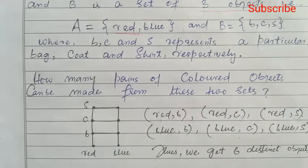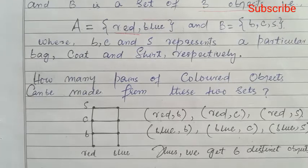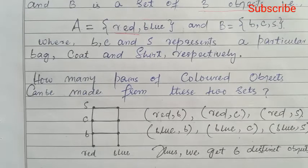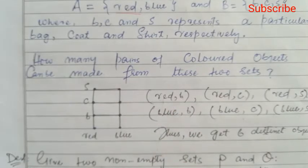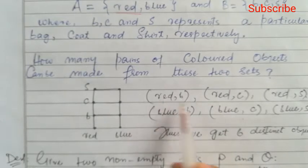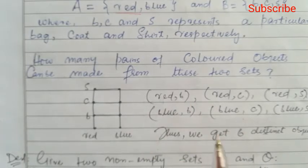For example, you have two pants and three shirts. For one pant, you can wear three shirts — pant stays the same but you can wear it with three different shirts. For another pant, you can again wear all three shirts. It means there are six ways — two pants times three shirts equals six ways to change your dress. These are the pairs, called ordered pairs.